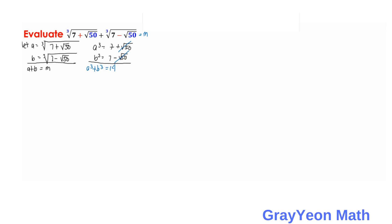Next, we apply an algebraic identity — the cube of a binomial, since we are working with cubes. So (a plus b) cubed equals a cubed plus b cubed plus 3ab times (a plus b). Since a plus b equals m, substituting gives m cubed equals 14 plus 3ab times m.